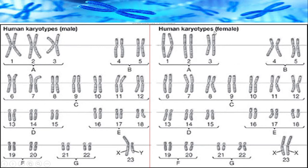In the human karyotype of a normal female, you can see all 22 pairs, and the 23rd pair shows two X chromosomes of the same size — they are homologous to each other. This is shown so you will understand what happens if an extra 21st chromosome or an extra X chromosome is added by mistake, and what the reasons are — which we will cover in this session.